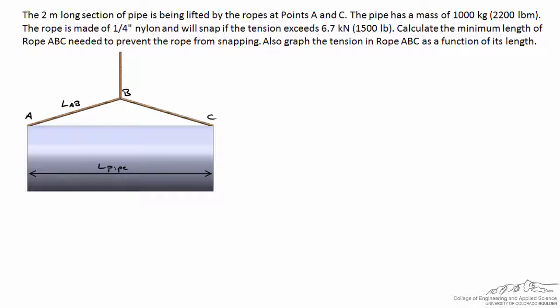We'll work this problem mathematically to confirm that graph shape. The specific problem: we have a pipe that's two meters long, lifted by ropes at points A and C. The mass of the pipe is 1,000 kilograms, and the rope is quarter-inch nylon that will snap if tension at any location exceeds 1,500 pounds. We want to calculate the minimum length of rope ABC needed to prevent it from snapping.